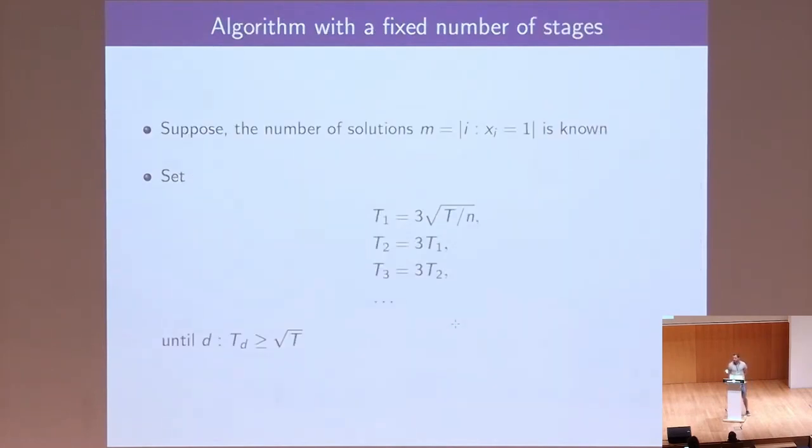So, how do we construct an algorithm when the number of solutions is known? We will define recursively a sequence of times and procedures. A sequence of times is very simply defined with T of 1 equal to three times the square root of T over N. What it achieves is that T of 1 is at least three times the quadratic average of all the individual running times. And each subsequent time step is three times larger than the previous one. We do so until we exceed the square root of capital T.